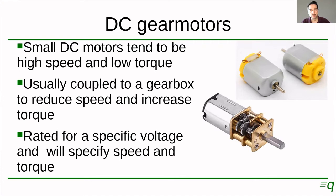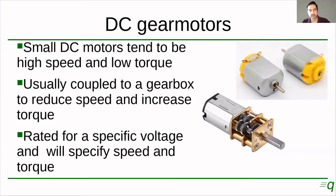This is what small DC motors actually look like on the outside. These are many times used for toys. Those tend to have a very high speed and low torque. So what's usually done is they're combined with a gearbox like this one here. The gearbox is a series of gears that reduce the speed and increase the torque. A motor will usually be specified for a set voltage and will have a speed and torque specified — and that's usually mostly for gear motors, when the motor gets combined with the gearbox.